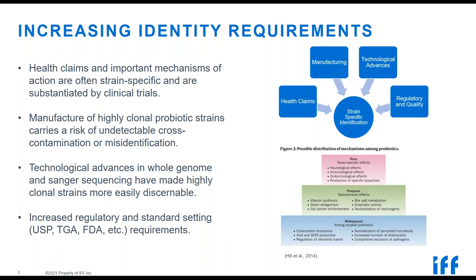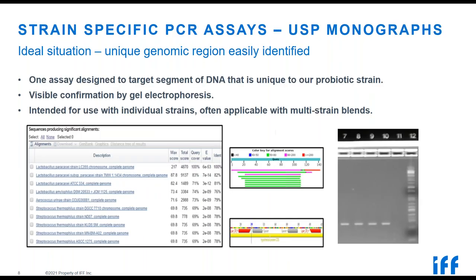Strain-specific PCR assays, captured in USP monographs: in an ideal situation, it's easy to identify a unique genomic region, and typically it takes one assay targeted on that unique region to identify our IFF probiotic strain from all other probiotics or bacteria in public or our own genomic databases. It's typically verifiable by gel electrophoresis and is intended for individual strains but often applicable with multi-strain blends, because the identified region is so unique that cross-reaction from other strains isn't a concern.